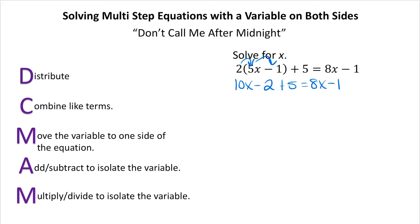Now let's go ahead and combine like terms. When you're combining like terms, you want to stay on either side of your equal sign — things on the left combine together and things on the right combine together. So we have 10x, and then minus 2 plus 5 are two constants that combine to form plus 3, giving us 10x plus 3 equals 8x minus 1.